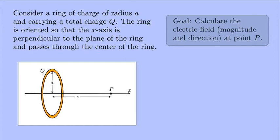You were asked to calculate the electric field, both the magnitude and the direction, at a point P that's located a distance x away from the center of a charged ring.